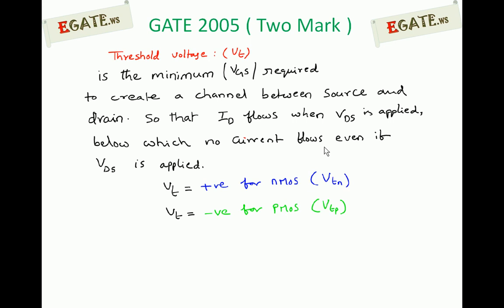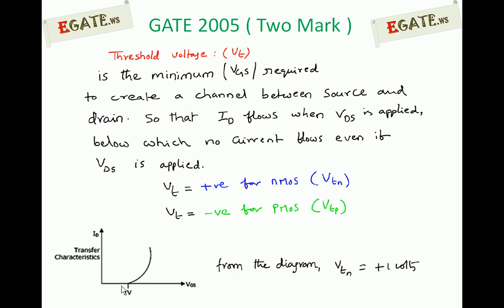For an N-MOSFET, threshold voltage must be applied as positive. For a P-MOSFET, threshold voltage is negative. From the transfer characteristics — ID versus VGS for the given VDS — drain current is zero until plus one volt is applied as VGS. So VGS equal to plus one volt is required to create a channel between drain and source; from that point, current starts to flow. Therefore, the threshold voltage VTN equals plus one volt.